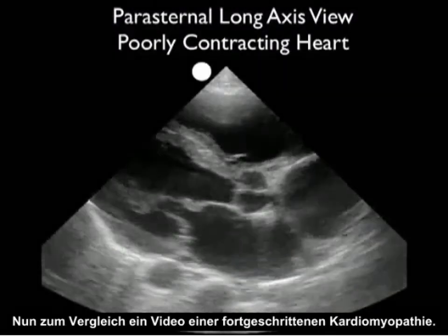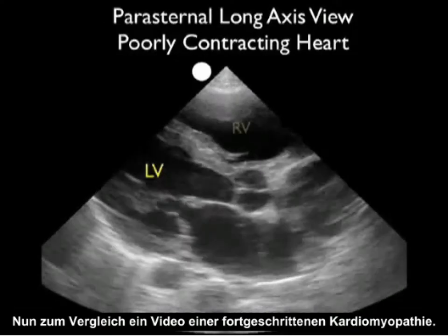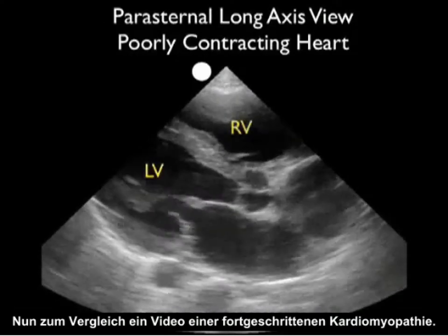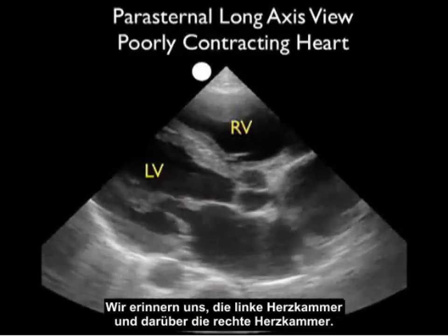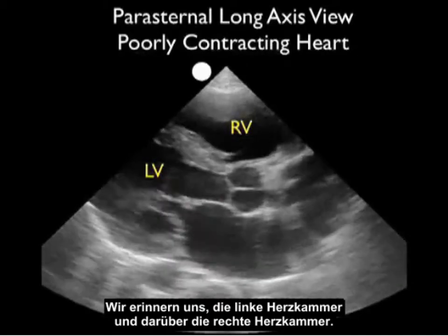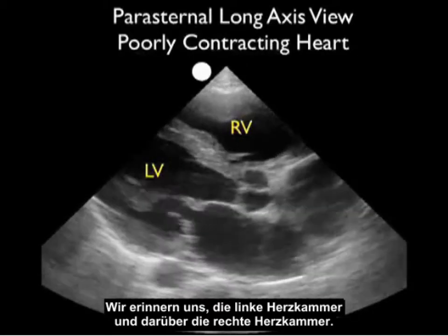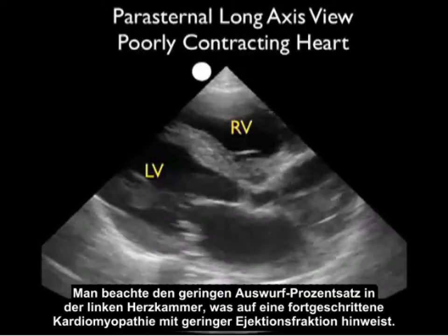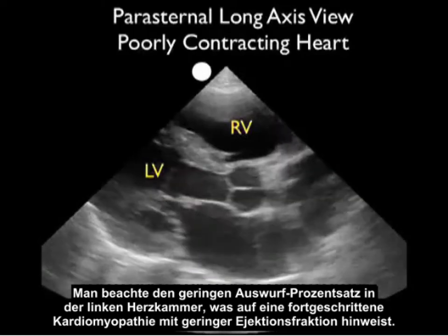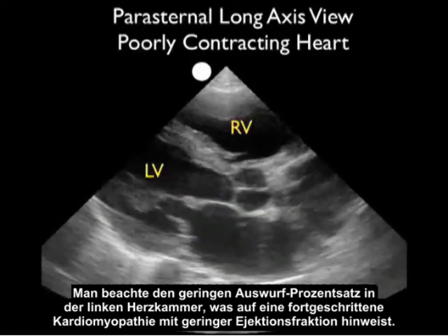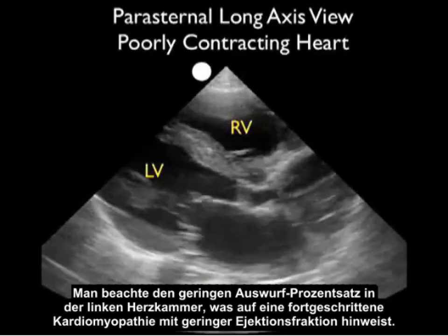Now let's contrast that last video clip with this one, taken from a patient with an advanced cardiomyopathy. We recall the left ventricle and the right ventricle in a superficial location above the LV. Notice the very poor percentage change of the endocardial walls of the left ventricle during systole, indicating a very decreased ejection fraction.